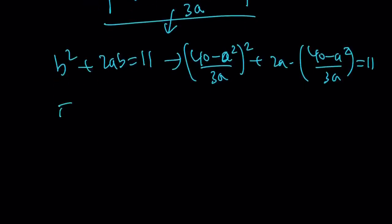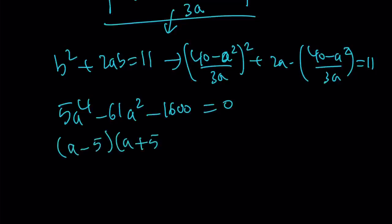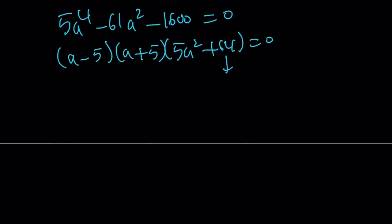That's going to give you a quartic equation. But it's bi-quadratic. If you simplify it, you can do it. You get the following quartic equation. Notice there's no a cubed or a, so this is easy to factor. This can be factored into a minus 5, a plus 5, and 5a squared plus 64 equals 0. From here, this is not going to give us any real solutions. a equals 5 implies b equals 1. a equals negative 5 implies b equals negative 1.